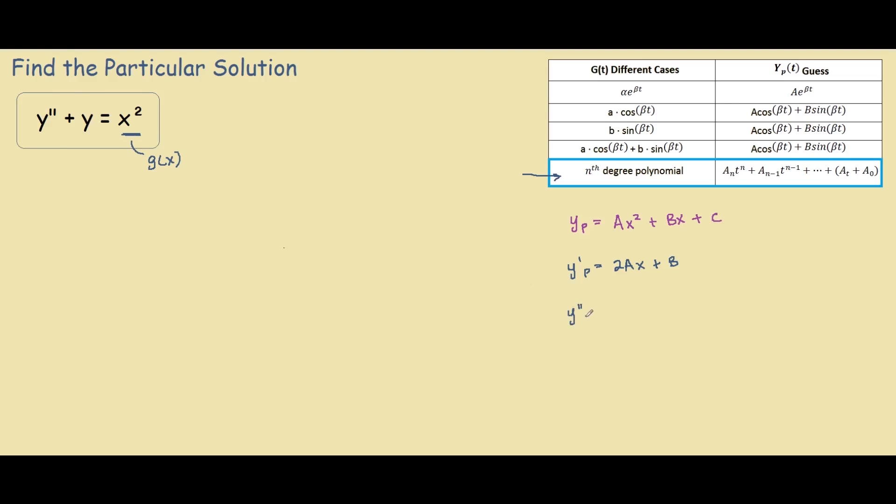And also we need to find the second derivative to plug it back into our inhomogeneous differential equation. So y double prime equals the derivative of y prime which is just 2a.